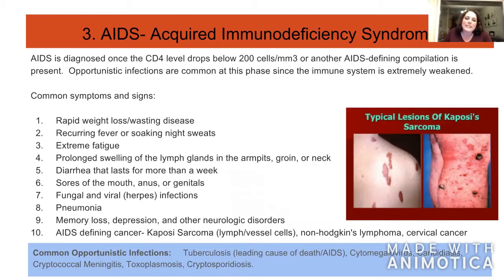Common signs and symptoms during the AIDS phase include rapid weight loss or wasting disease — defined as losing more than 10 percent of body weight, especially muscle — recurring fever or soaking night sweats, extreme fatigue, prolonged swelling of the lymph glands in the armpit, groin, or neck, diarrhea lasting more than a month, sores of the mouth, anus, and genitals, fungal and viral infections, pneumonia, memory loss, depression, and other neurological disorders. AIDS-defining cancers include Kaposi's sarcoma, a cancer of the lymph nodes or blood vessel cells, non-Hodgkin's lymphoma, and cervical cancer.